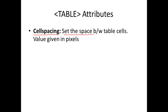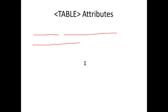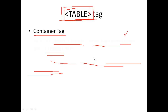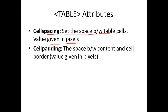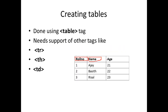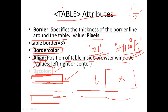Cell spacing is used to set the space between table cells, with the value given in pixels. A cell is each individual data box in the table. Cell padding is the space between the content and the cell border — that is, the space inside each cell between the content and its border.